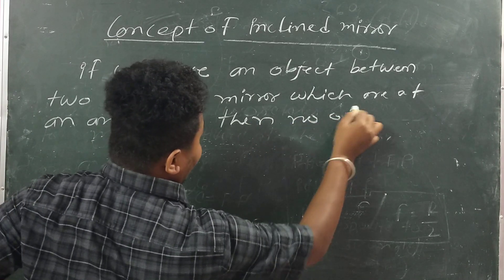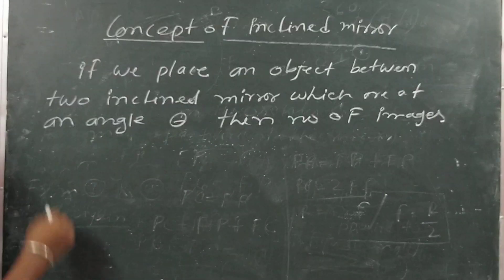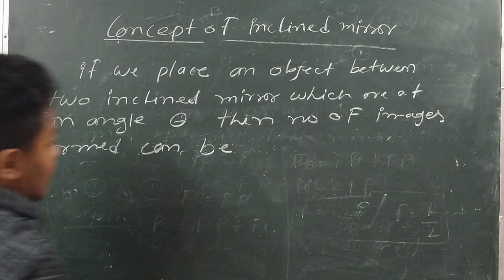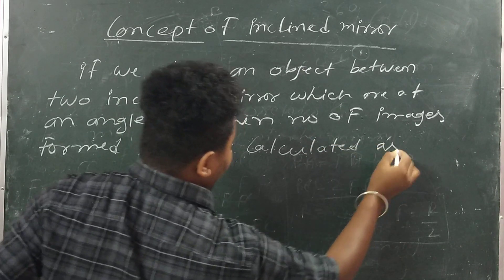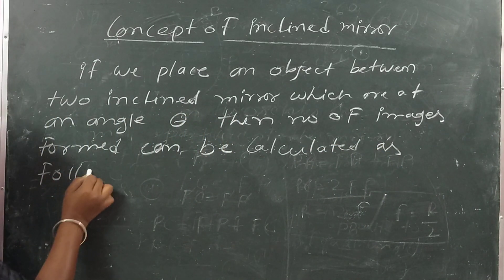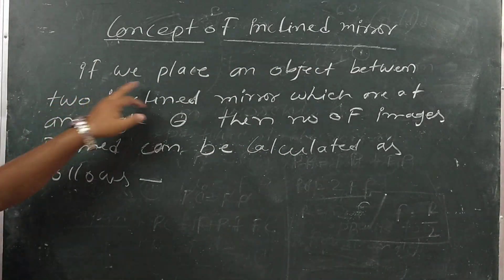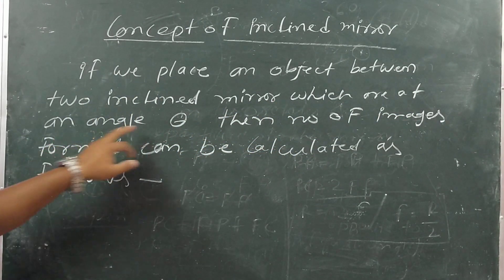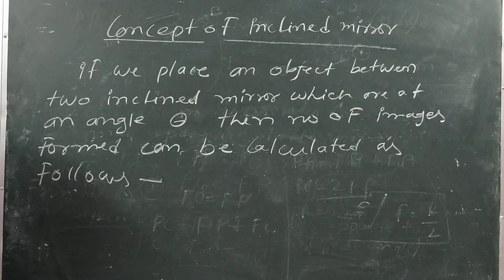The number of images formed can be calculated using a formula. If we place an object between two inclined mirrors at angle theta, the number of images formed can be calculated as follows.